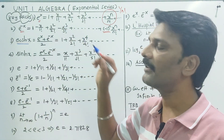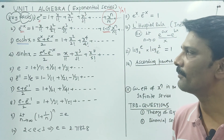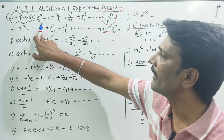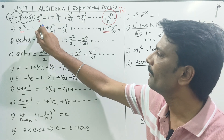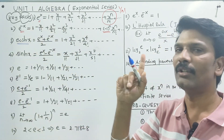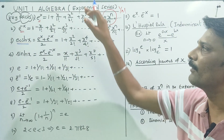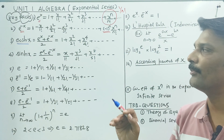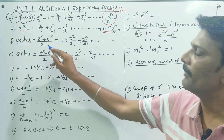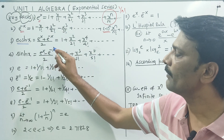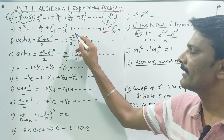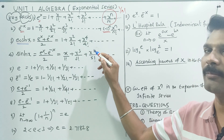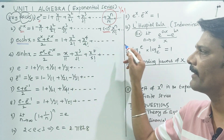e power x plus e power minus x by 2. If you add the two, the 1 cancels. 1 plus 1 equals 2. So e power x plus e power minus x by 2 is equal to 1 plus x squared by 2 factorial plus x power 4 by 4 factorial plus etc.